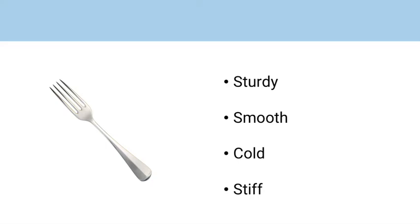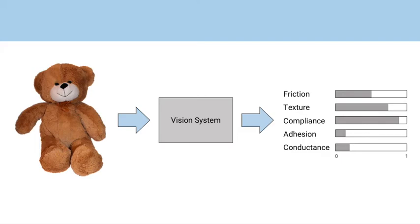Humans form a mental model at a young age that associates visual signals with physical properties of objects. In this work, we aim to build a visual system to map images to tactile physical properties. Instead of generating tactile adjectives, we measure and estimate numerical values for 15 tactile properties.